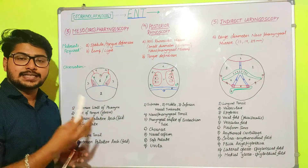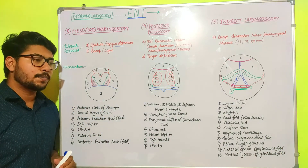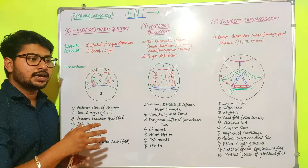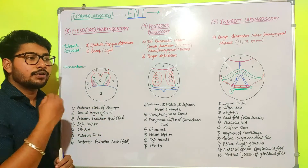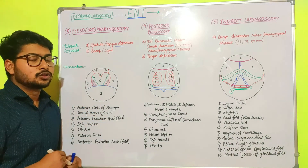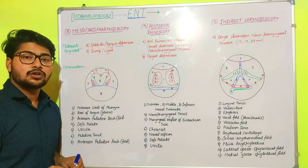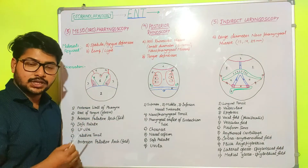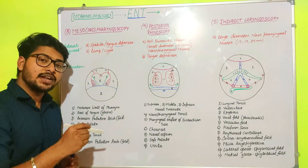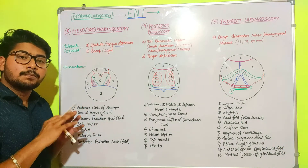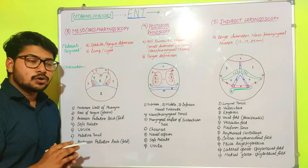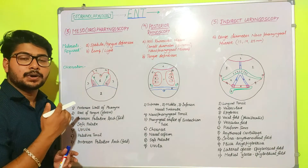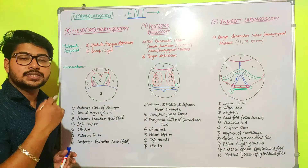For the procedure of mesopharyngoscopy, first we ask the patient to sit down calmly, then instruct the patient to open the mouth. Through this tongue depressor, we check the space present between the gum and the cheeks. Then we depress the tongue for a complete overview of the oropharynx, checking the space in the buccal cavity between the gums and the cheeks.